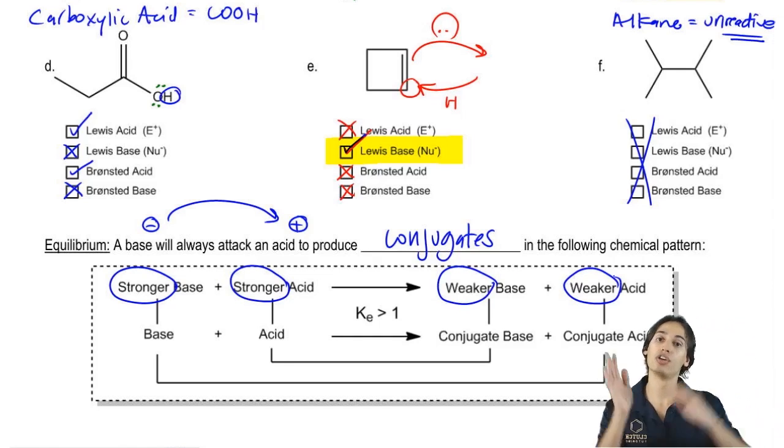So this is the way it works. Basically, you're always going to get your stronger base and your stronger acids reacting together to make a weaker base and a weaker acid. So you always go from stronger to weaker. It just makes sense. You're never going to go from weaker to stronger.